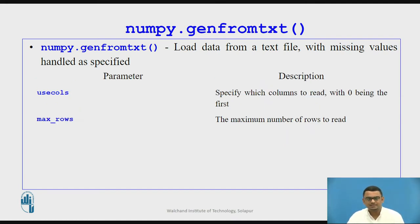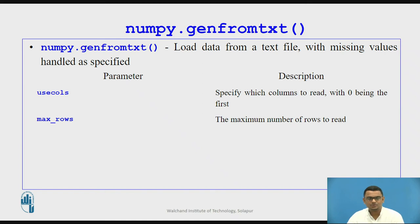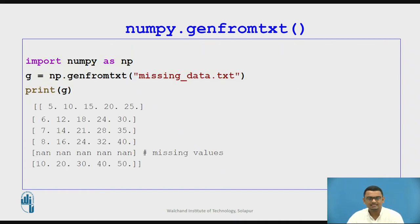Some more parameters used in genfromtxt: usecols specifies which columns to read, with 0 being the first column — so if you want to read specific columns from the dataset you can use this parameter. max_rows specifies the maximum number of rows to read. We shall now see examples of genfromtxt.